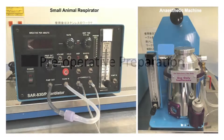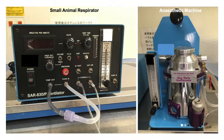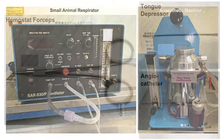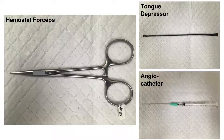Prepare the following equipment before the surgery: a small animal respirator and an anesthetic machine. An intubation kit composed of a pair of hemostat forceps, a tongue depressor, and an 18-gauge endocatheter.